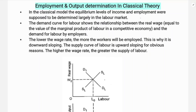In the classical model, the equilibrium levels of income and employment were supposed to be determined largely in the labor market. The labor market determines output and employment according to the classical economists. The key equation is that output Q is a function of labor.